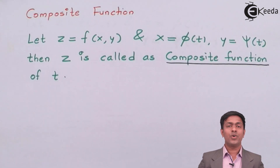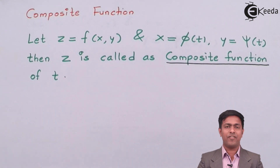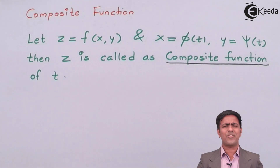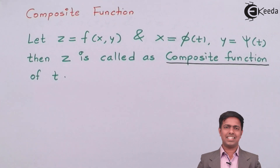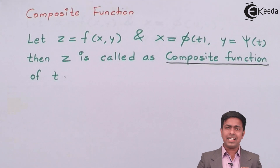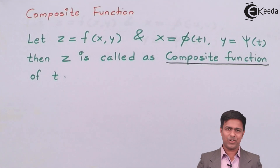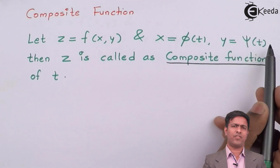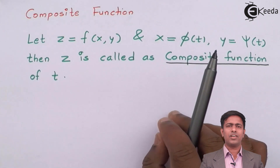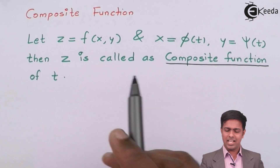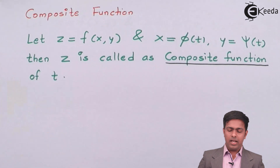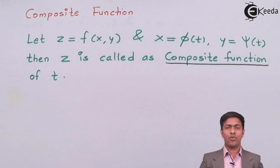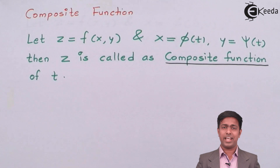Here we have the definition of composite function. I've considered one function Z which is a function of X and Y. Then X is a function of T, written as φ(T), and Y is also a function of T, written as ψ(T). So X and Y are the functions of T, and Z is a function of X and Y.